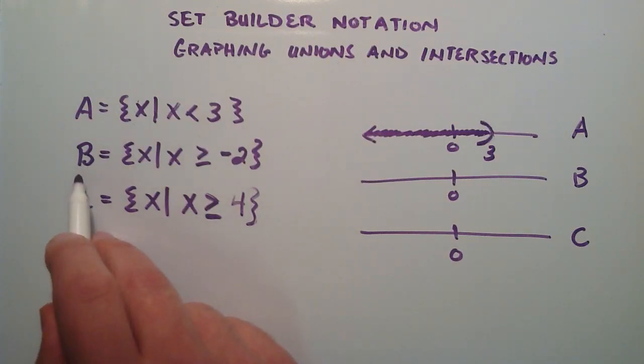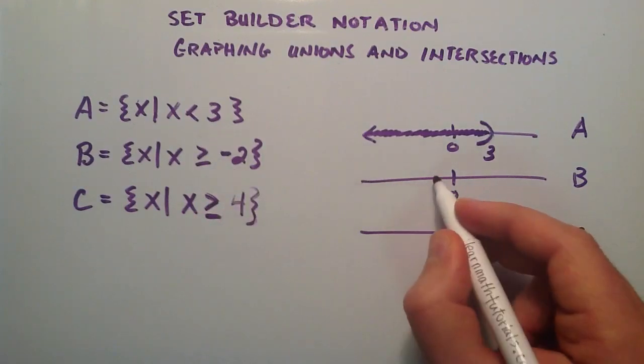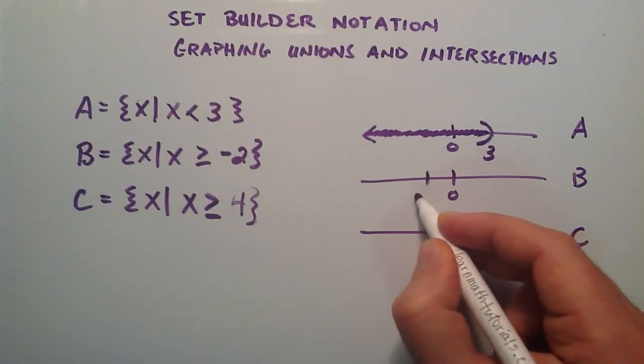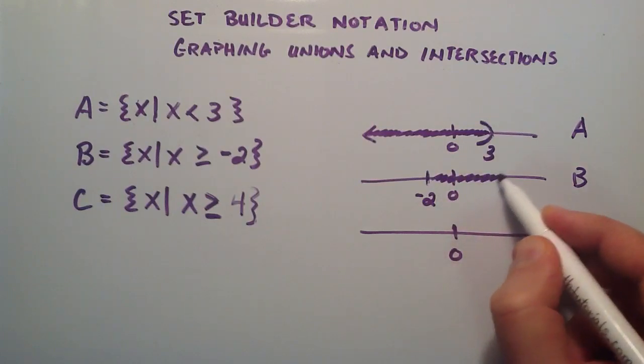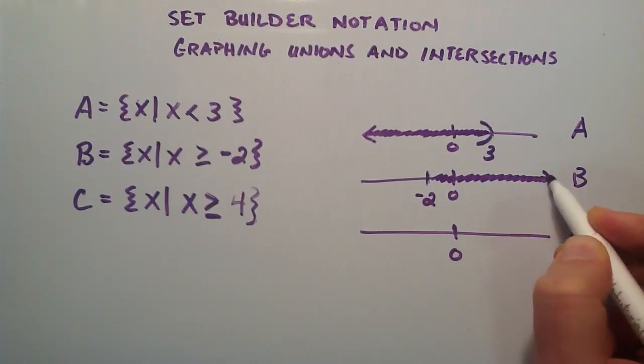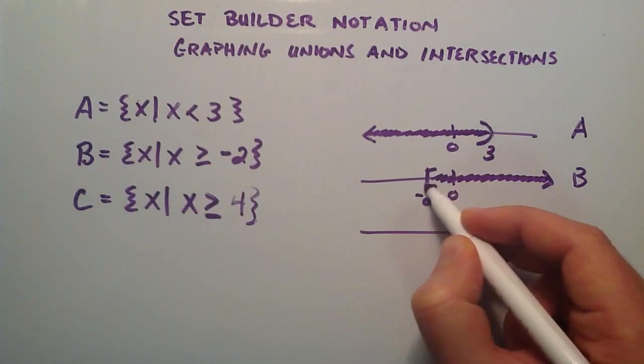Set B is all of the numbers greater than or equal to negative 2. So negative 2 is right about there, and the values that are greater than negative 2, I'll go ahead and shade in. Because we have a greater than or equal to sign, we need to make this a square bracket here.